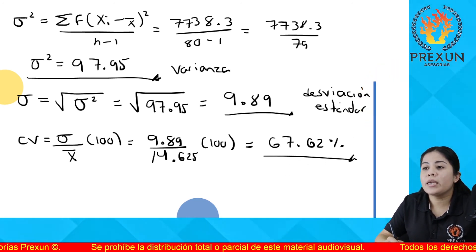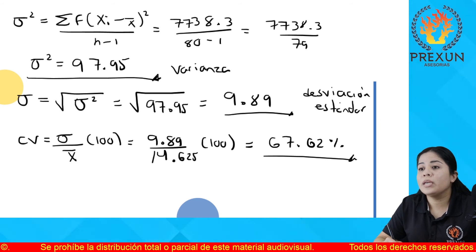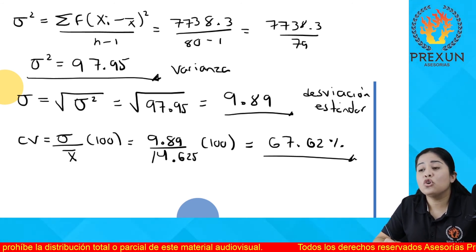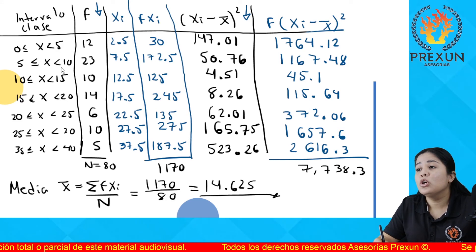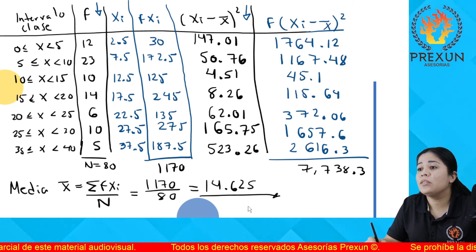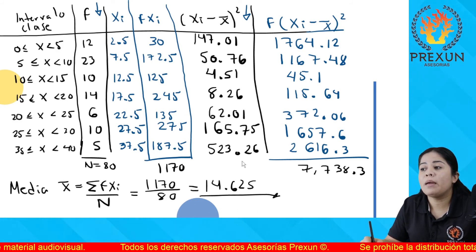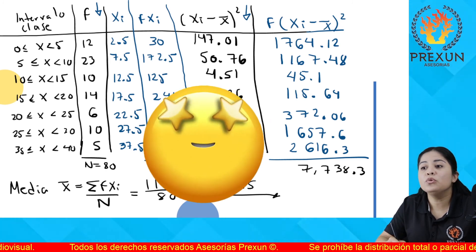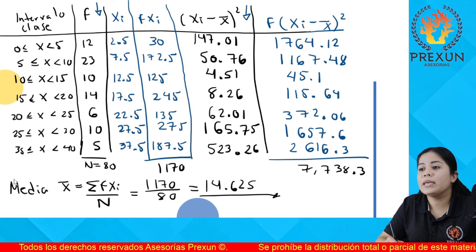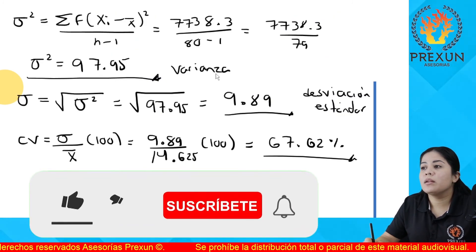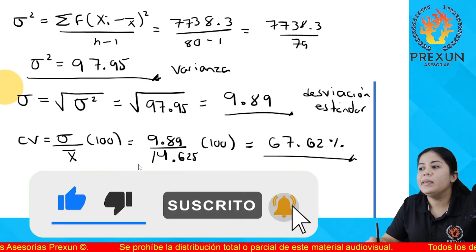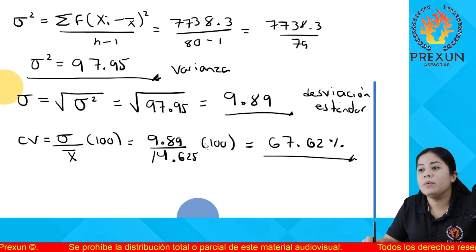Este porcentaje es muy alto, por lo tanto, quiere decir que los datos no son muy homogéneos con todos los datos que nos están dando y con respecto a la media obtenida que fue de 14.62. Aquí determinamos la media, determinamos la varianza, la desviación y el coeficiente de variabilidad.